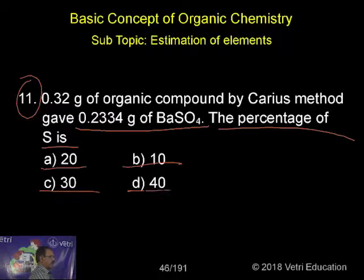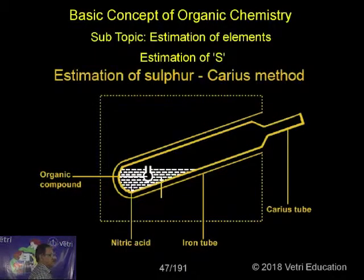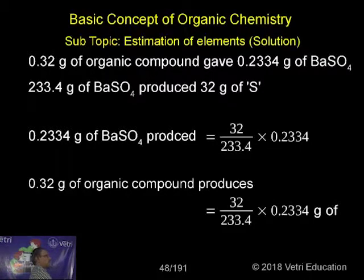c) 30, and d) 40. Same procedure, same method. So what we have to do now is find the barium sulfate molecular weight, the amount of barium present, and then in 0.2334 how much, then in 0.32 how much, then for 100 how much you will get. Just follow me. This is the diagram, Carius method, let me start now.